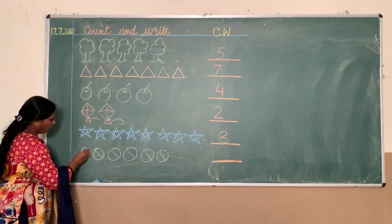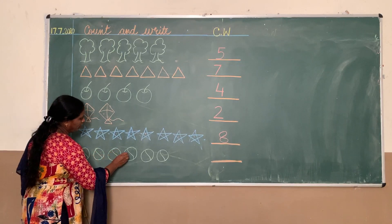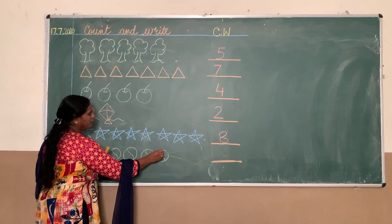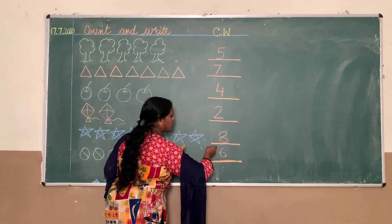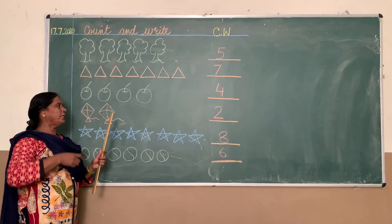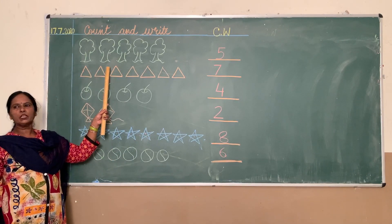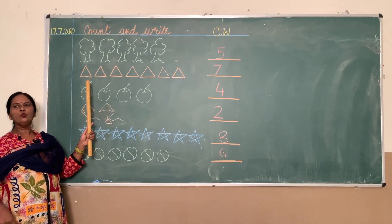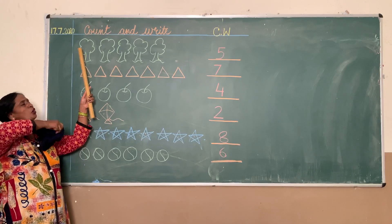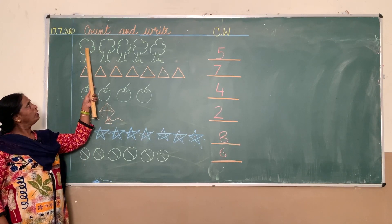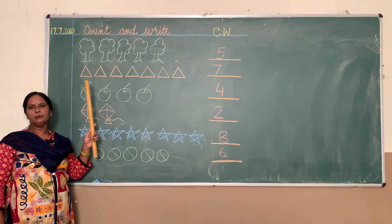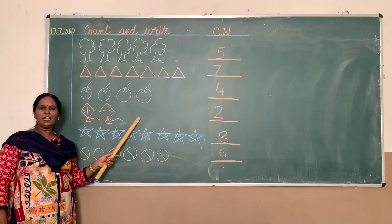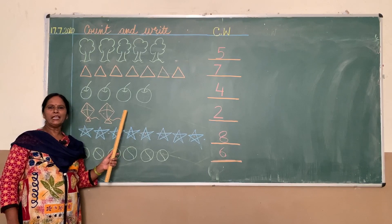So children, I think you all must have understood count and write. Whenever you count a thing, always put your pencil and put a dot. If you put a dot on each object, you will never make a mistake. Okay children, I hope you all enjoyed. Thank you so much.